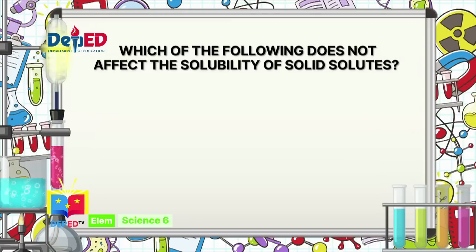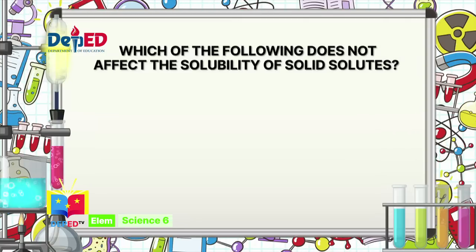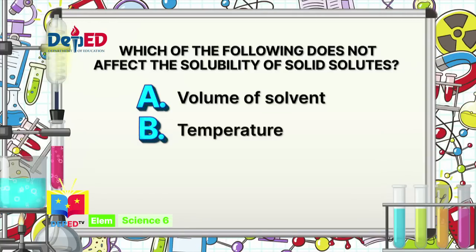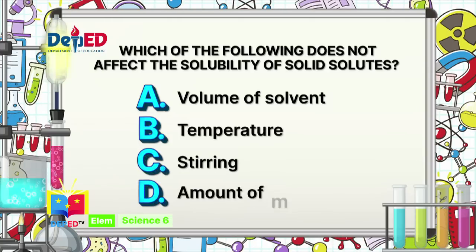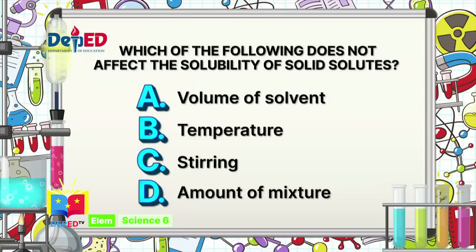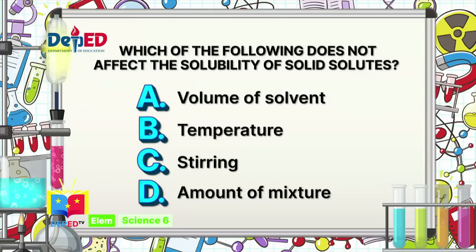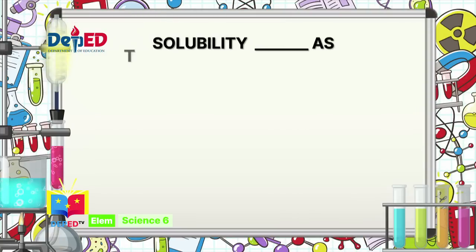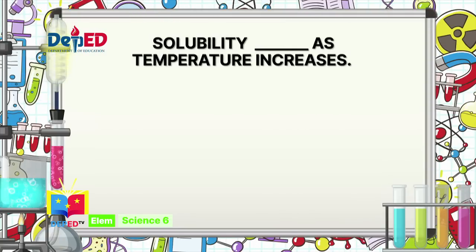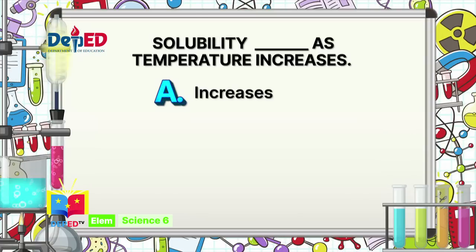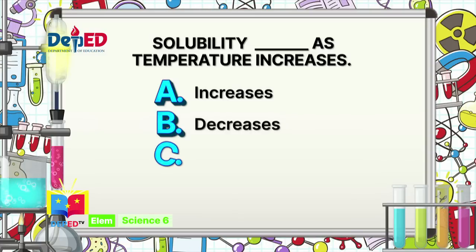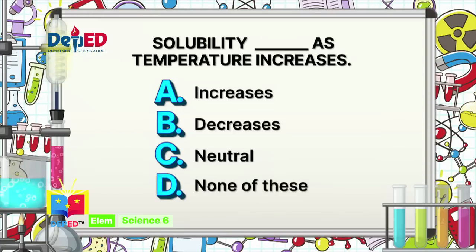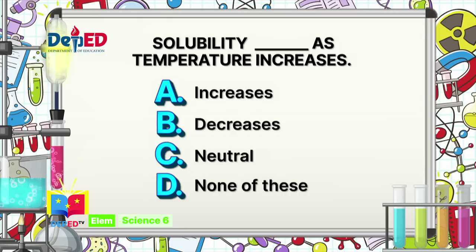Number 4: Which of the following does not affect the solubility of solid solutes? A — Volume of solvent. B — Temperature. C — Stirring. Or D — Amount of mixture. The correct answer is D: Amount of mixture. Number 5: Solubility blank as temperature increases. A — Increases. B — Decreases. C — Neutral. Or D — None of these. The correct answer is A: Increases.